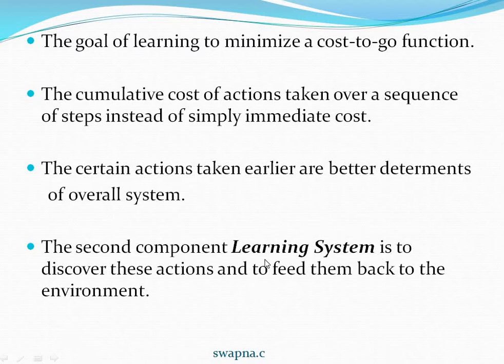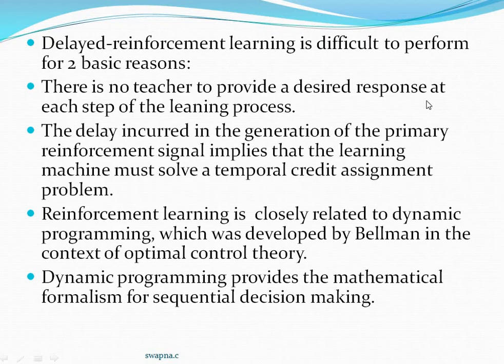The main work of the Learning System is to discover better actions and feed them back to the environment. Delayed Reinforcement Learning is difficult for two main reasons: there is no teacher to provide the desired response at each step, and the delay in generating the Primary Reinforcement signal means the learning machine must solve the temporal credit assignment problem.